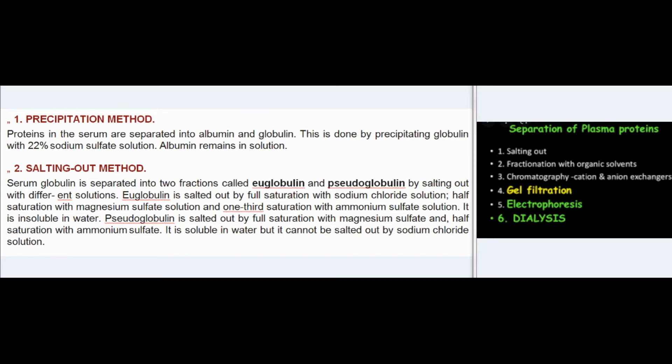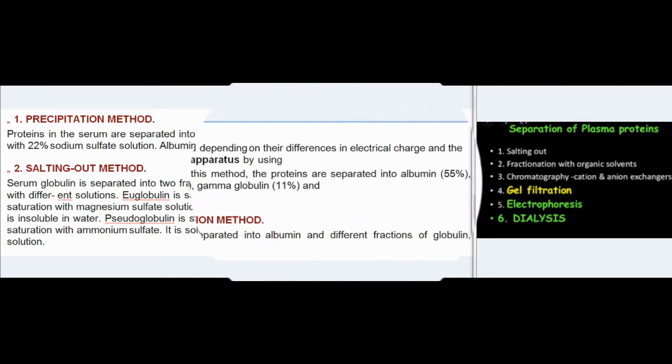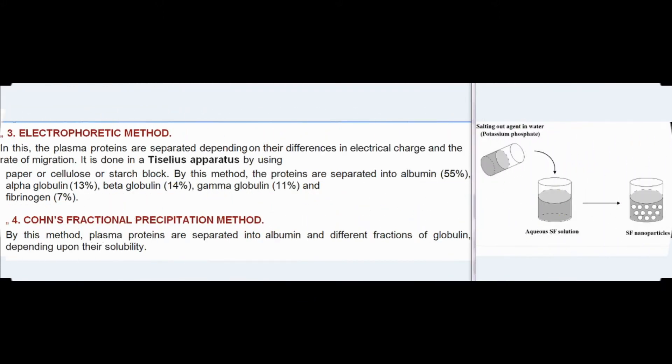Pseudoglobulin is salted out by full saturation with magnesium sulfate and half saturation with ammonium sulfate. It is soluble in water but cannot be salted out by sodium chloride solution.